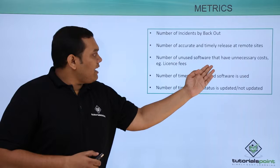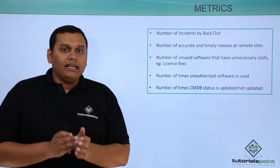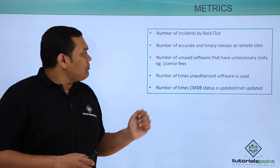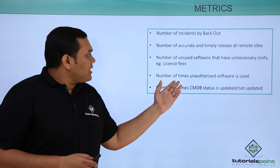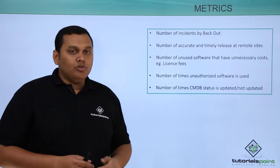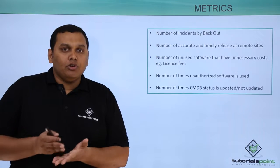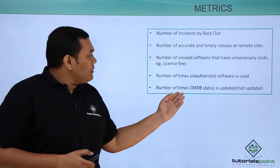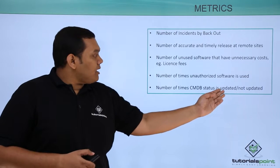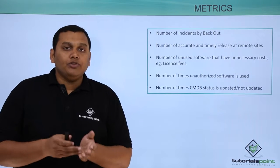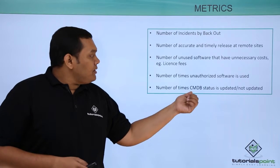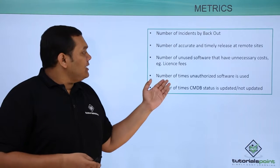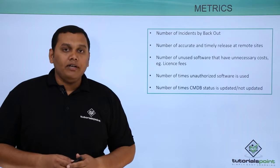Number of unused software that have unnecessary costs, such as license fees, are also accountable in release and deployment management. Number of times unauthorized software is used is also accountable. Number of times CMDB status is updated or not updated is considered in the metrics of release and deployment management.